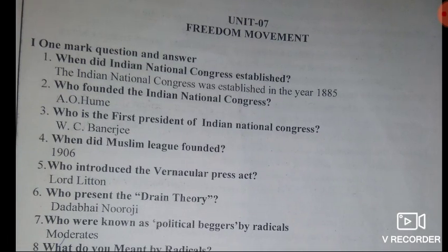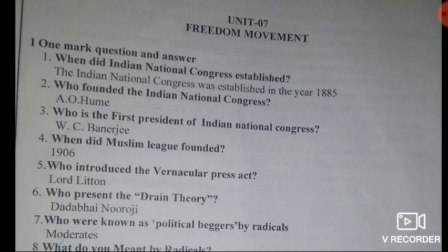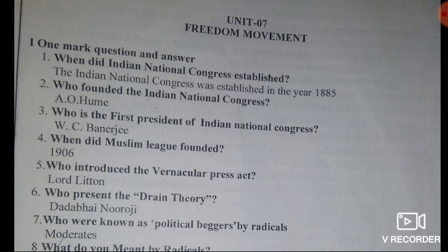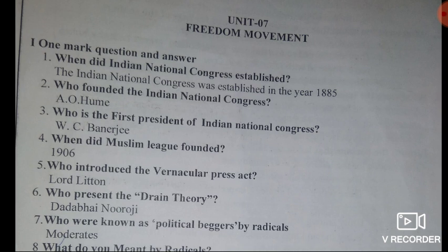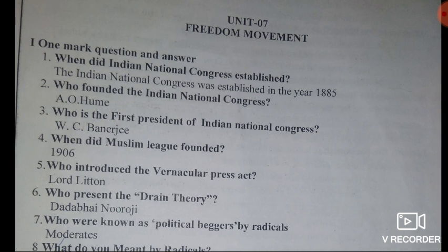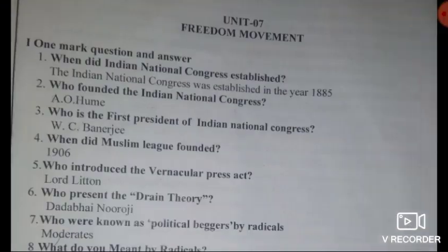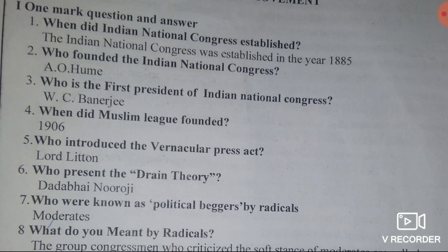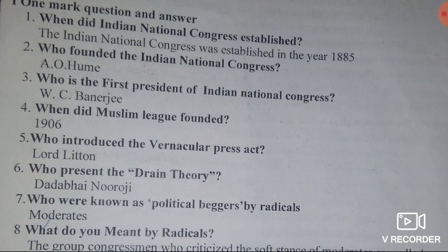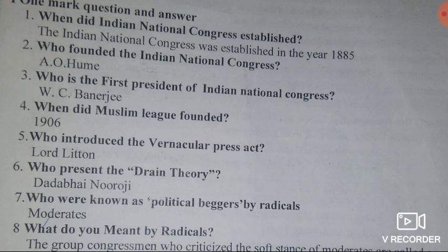Now the one mark question and answers. Question one: when did the Indian National Congress get established? Answer: the Indian National Congress was established in the year 1885. Question two: who founded the Indian National Congress? Answer: A.O. Hume founded the Indian National Congress.